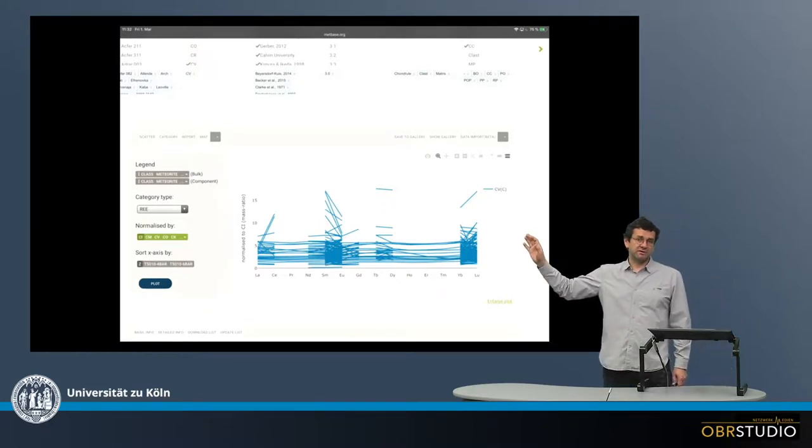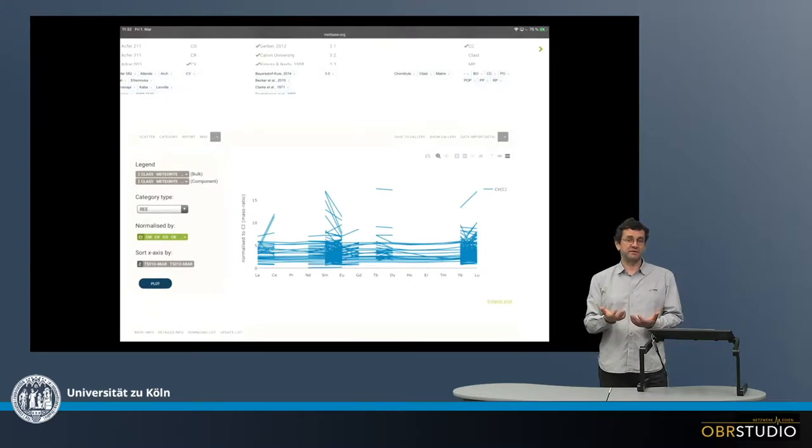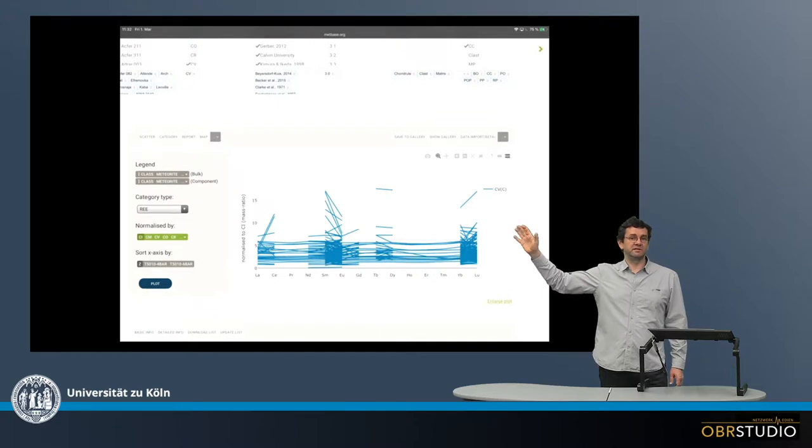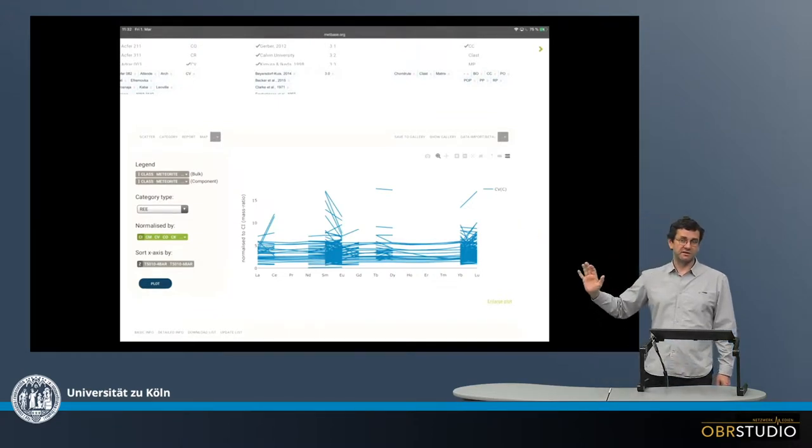For the light rare earth elements, you can see that some are quite enriched. And there are C-i's that are enriched in light rare earth elements. So, in these cases, we might really see the contribution of C-i's to some of the chondrules. But in general, there is none.